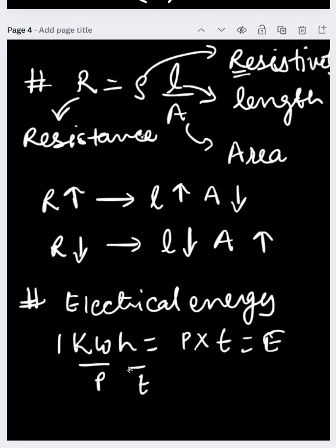In that case, resistance is directly proportional to length and inversely proportional to area. When you increase the length and decrease the area (the denominator), resistance will increase. Similarly, when you decrease the length and increase the area, resistance will decrease.